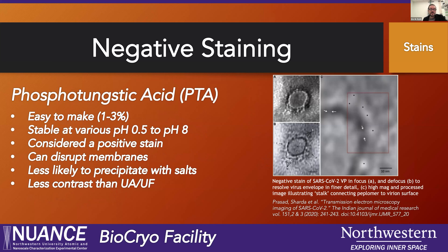The next stain I like to use is phosphotungstic acid, or PTA. It's easy to make — you can titrate it up to a pH of 8, even though it's called an acid. It's considered more of a positive stain than a negative stain. With negative staining, we're essentially staining the background — the metals pool around our molecules and we get what looks like a photographic negative, which is why it's called negative staining. But in some cases you can have more of a positive stain appearance. Here we have a COVID virus particle and we're able to see its structure with just negative staining.